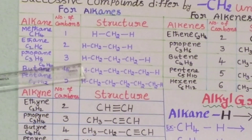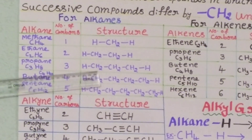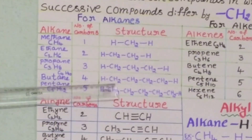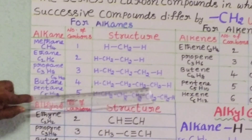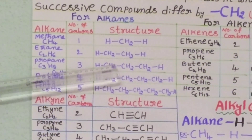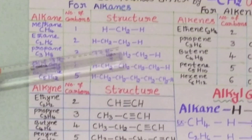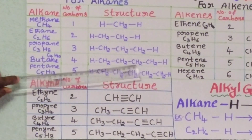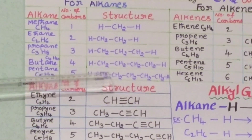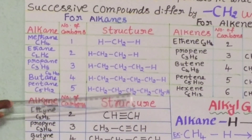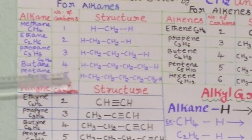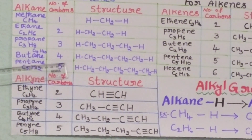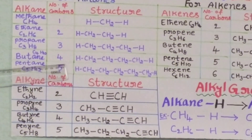When we compare propane and ethane, there is one more increase of a CH2 group. When we observe propane and butane, there is an increase of one more CH2 unit. Ethane has 2 CH2 units, propane has 3, butane has 4, and pentane has 5 CH2 units. Each two successive alkanes differ by one CH2 group. This is called a homologous series of alkanes.